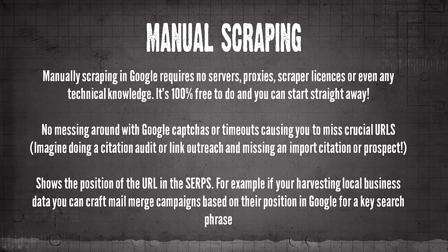There's no messing around with Google CAPTCHAs or timeouts causing you to miss crucial URLs. Imagine if you're doing a citation audit with ScrapeBox and you miss crucial citations you needed to change, or you're scraping for local business information and it timed out — that would be detrimental to the campaign. You could have actually landed that client if it hadn't timed out and you hadn't missed that URL.